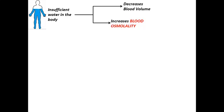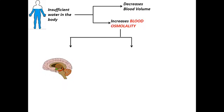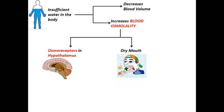This increment in blood osmolality is sensed by osmoreceptors in the hypothalamus. The hypothalamus is a small gland located above the pituitary gland, and also connected to the pituitary via a stalk called the infundibulum. The increment in blood osmolality also leads to dryness of our mouth.